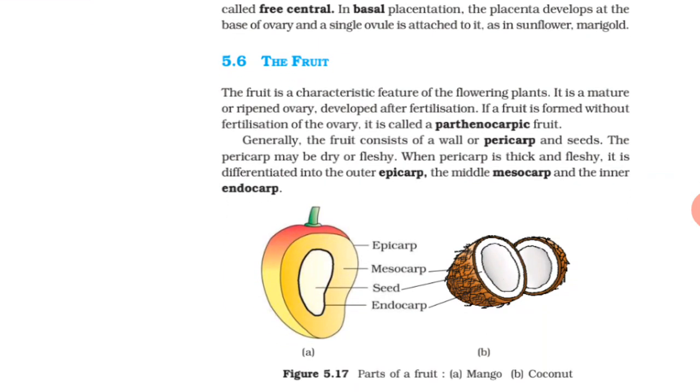The fruit. The fruit is a characteristic feature of the flowering plants. It is mature or ripe ovary developed after fertilization. If a fruit is formed without fertilization of the ovary, it is called a parthenocarpic fruit. Generally, the fruit consists of a wall or pericarp and seeds. The pericarp may be dry or fleshy.